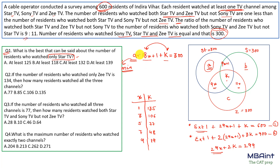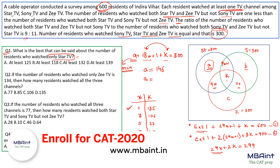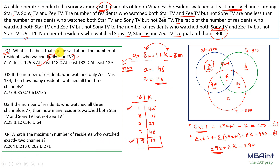Question 1 asks for the minimum number of residents who watched only Star TV (region A). Since minimum A comes from maximum (18x+K), we test extreme combinations. At x=1, K=135: 18(1)+135=153, so A = 300−154 = 146. At x=9, K=19: 18(9)+19=181, so A = 300−182 = 118. So the minimum value of A is 118.